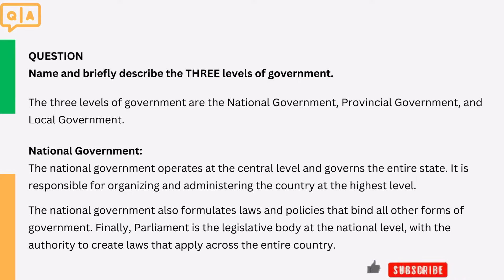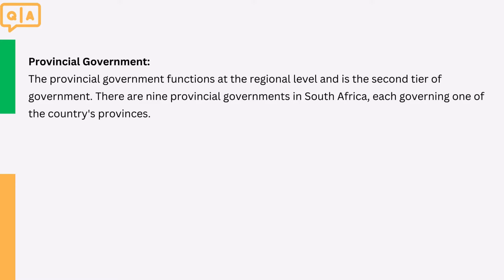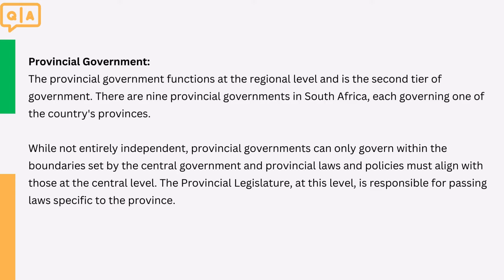2. Provincial government. The provincial government functions at the regional level and is the second tier of government. There are nine provincial governments in South Africa, each governing one of the country's provinces. While not entirely independent, provincial governments can only govern within the boundaries set by the central government, and provincial laws and policies must align with those at the central level. The provincial legislature at this level is responsible for passing laws specific to the province.